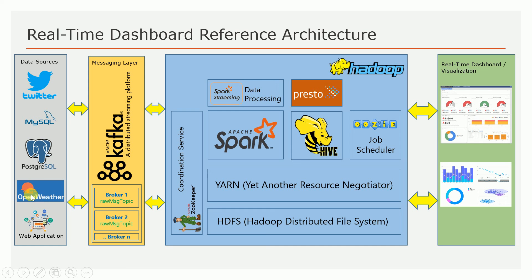Here is the high-level flow: I wrote a Kafka producer — essentially a data generator — which reads the OpenWeather API and publishes the data into a Kafka topic called sample topic one. Those messages or events are consumed by a Spark Streaming application, which performs basic data manipulation and then writes the results into HDFS.